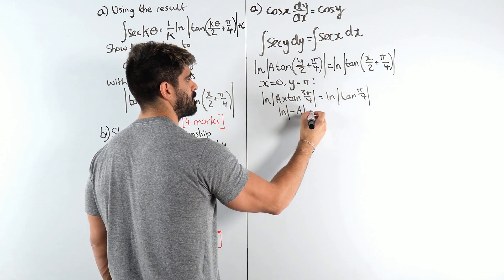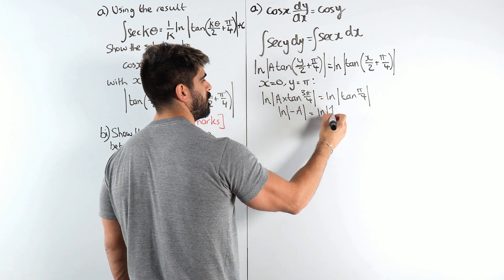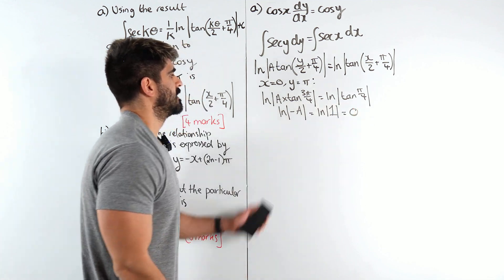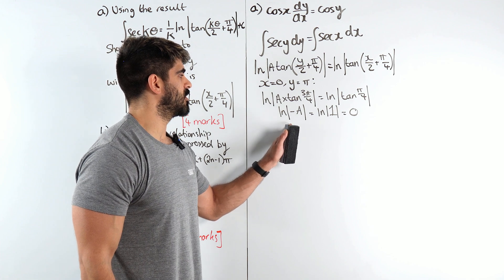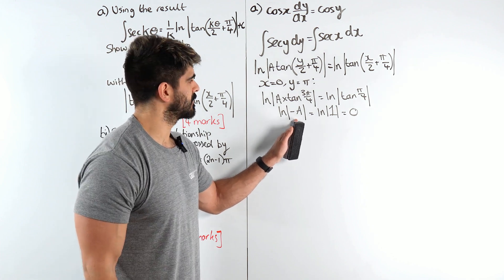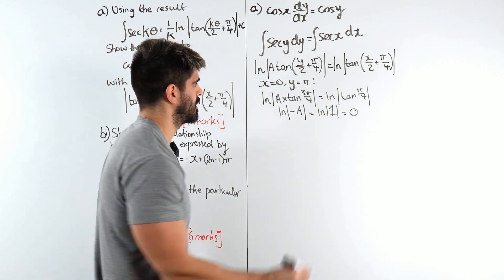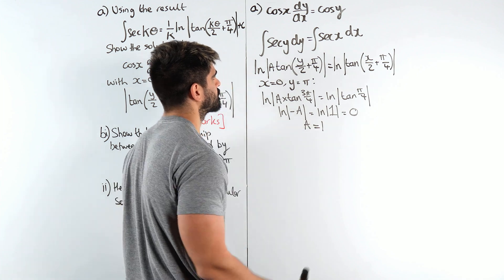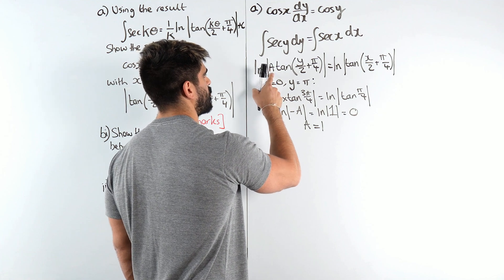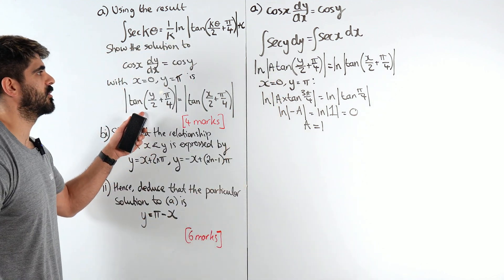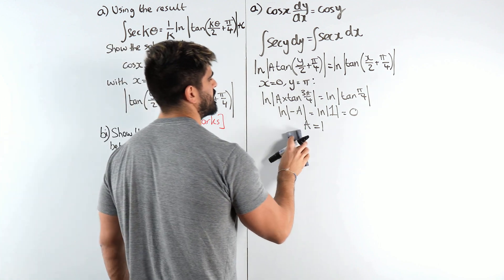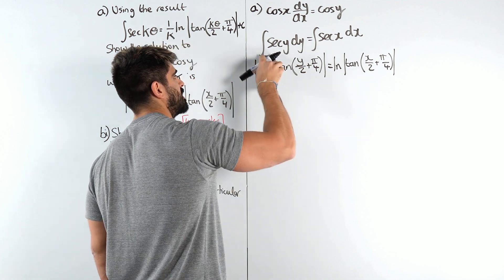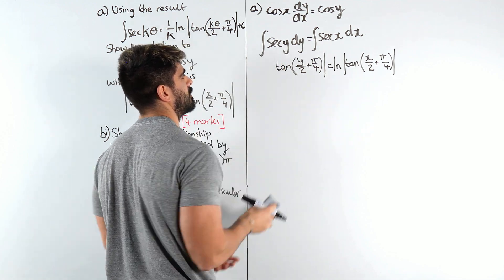So you get negative a is ln of 1. ln of 1 is 0. Now ln of the modulus of a, ln of a negative, that just becomes positive. So we have a is e to the power of 0 is 1. So if I was to backtrack here guys, a is just 1 and then we get our solution. Just to save some space I'm gonna remove this and let's just change this a to be 1 and continue with our problem.